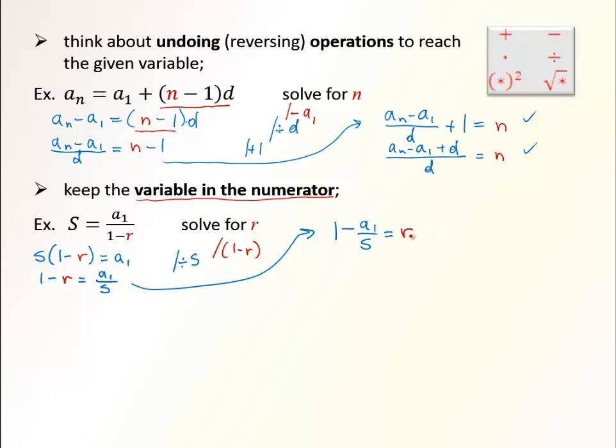So it will be 1 minus a₁/S equals r. And again, this is already a good answer, but we could write this under one denominator, so under S. Then the numerator would become S minus a₁. So again, both answers are correct.